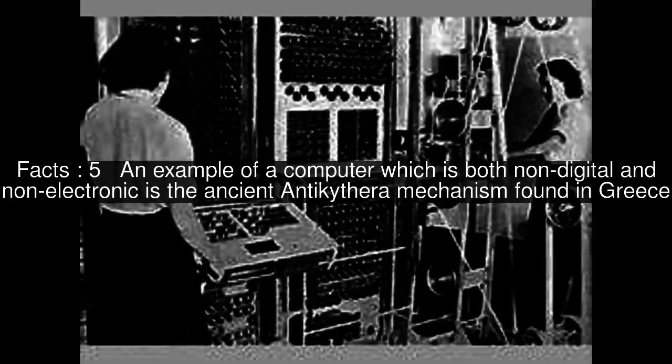An example of a computer which is both non-digital and non-electronic is the ancient Antikythera mechanism found in Greece. All kinds of computers, whether they are digital or analog, and electronic or non-electronic, can be Turing complete if they have sufficient memory.